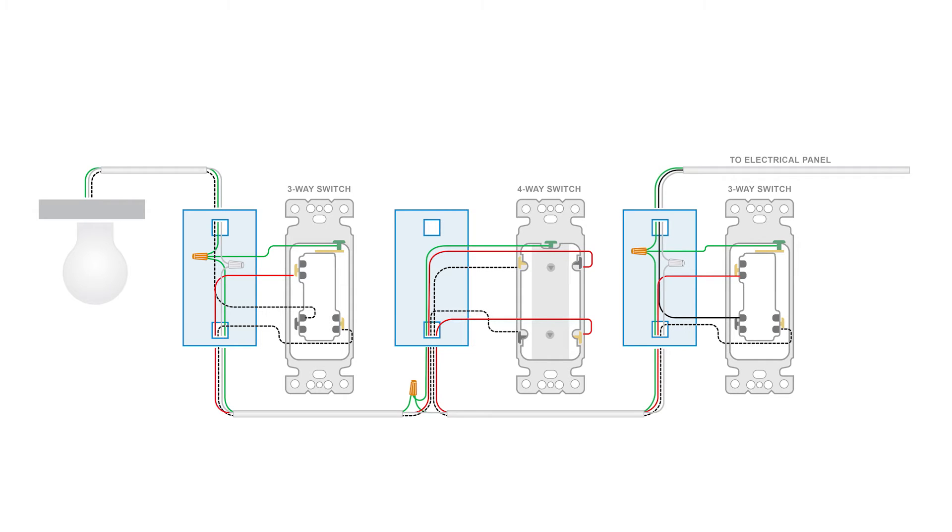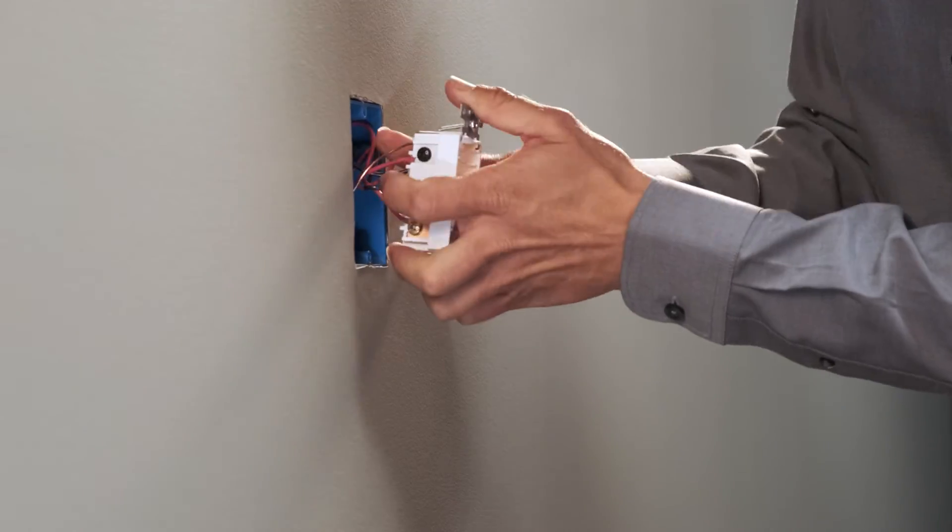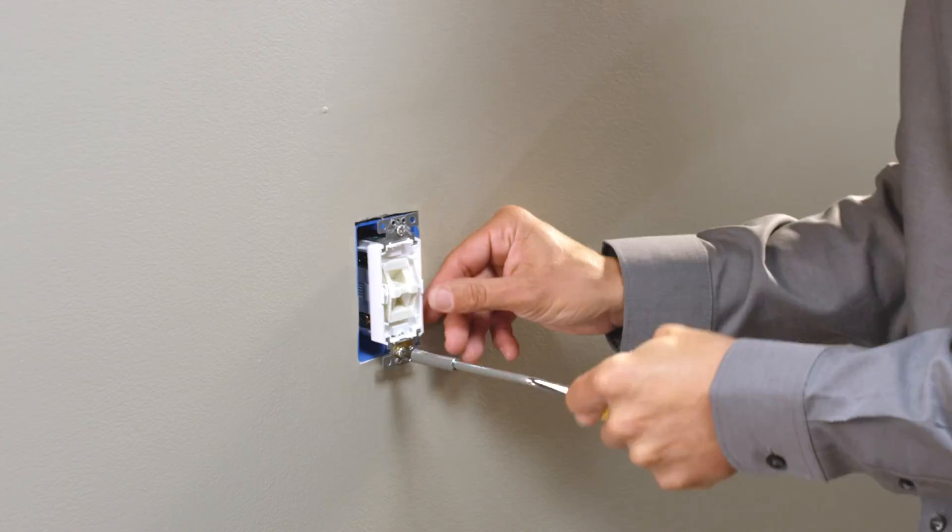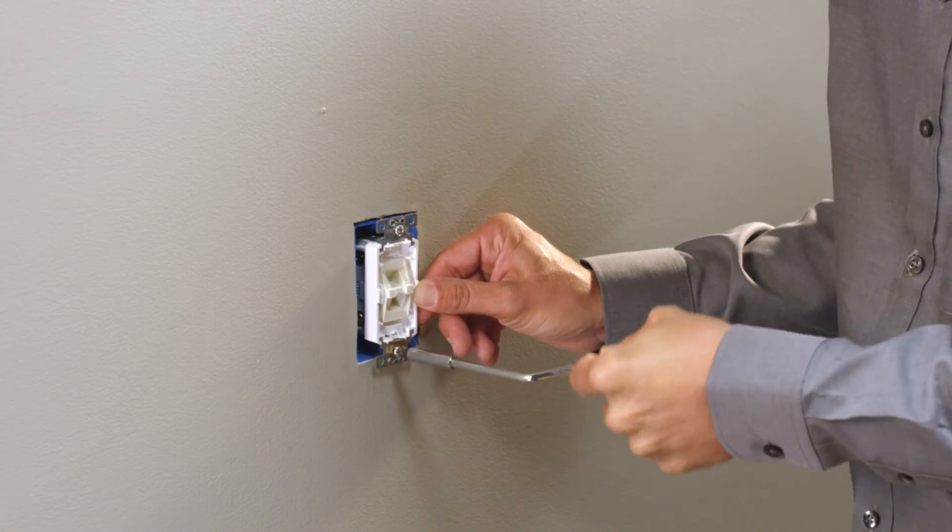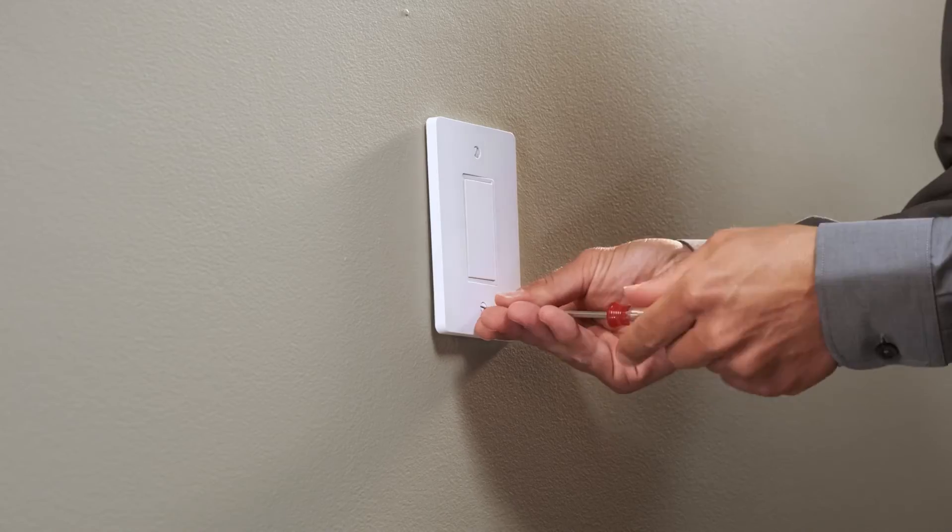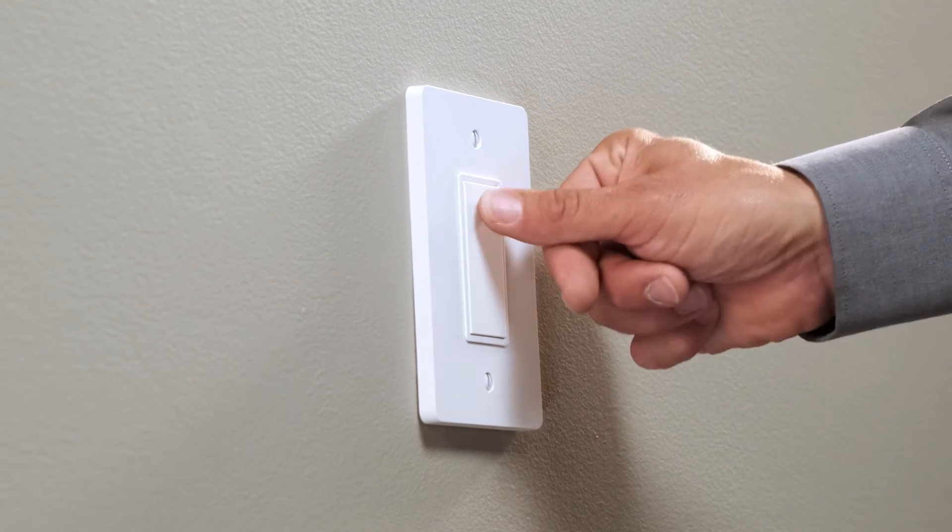The following diagram is an example of a common installation. Once your wiring is complete, you can mount your device by simply tightening the screws. Then install a Square-D X-Series rocker plate and wall plate. Restore power and test.